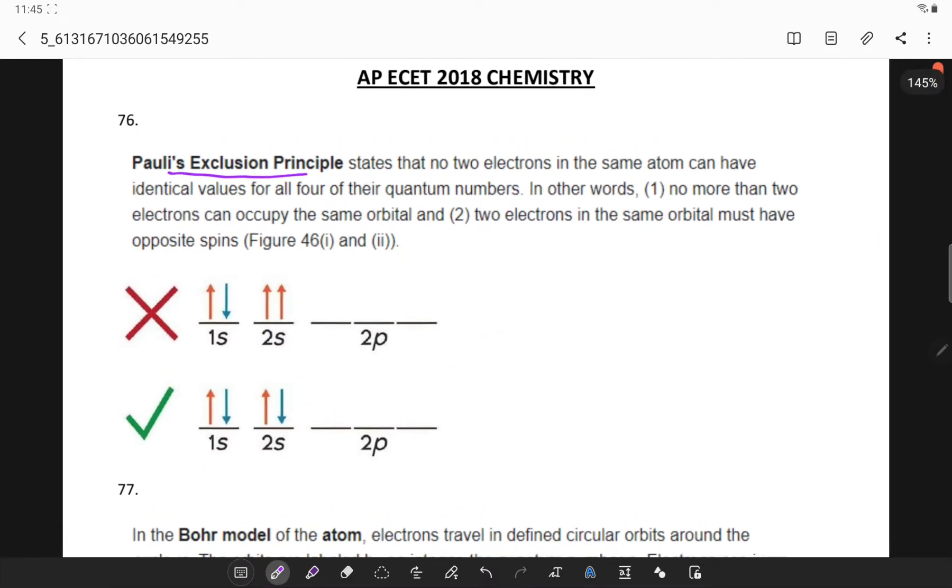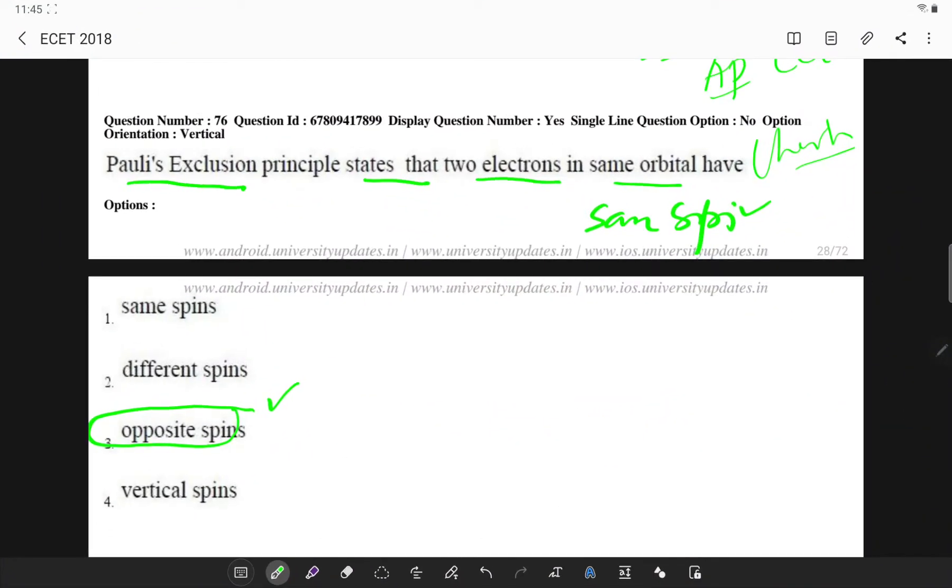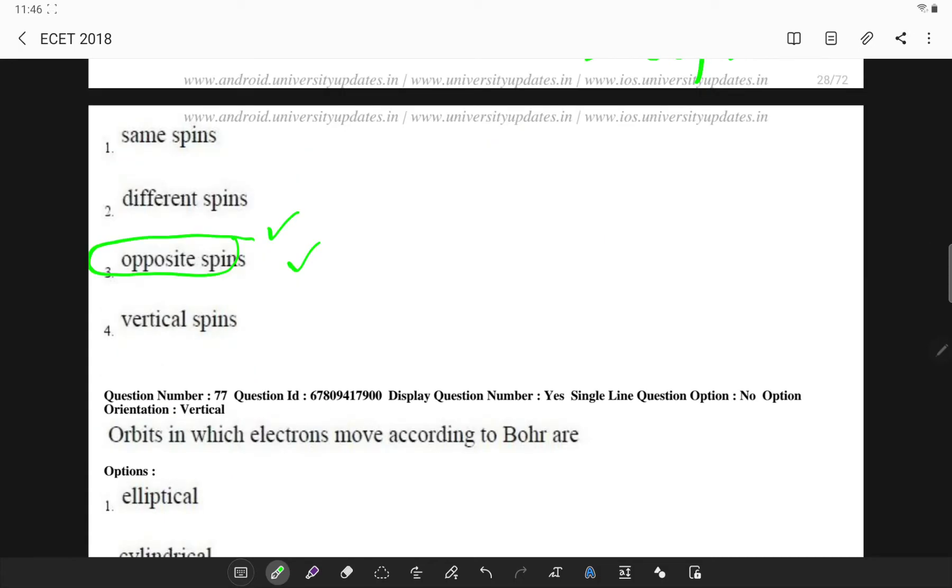So what exactly is Pauli's exclusion principle? It states that no two electrons in the same atom can have identical values for all four of their quantum numbers. So observe this. Here these two are in the same direction, whereas here they are in the opposite direction. Pauli's exclusion principle clearly states that the two electrons in the same orbital must have opposite spins.